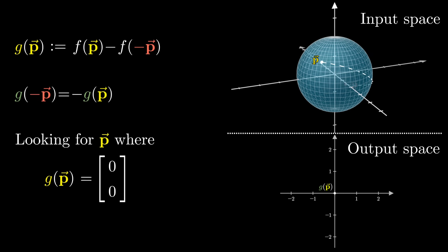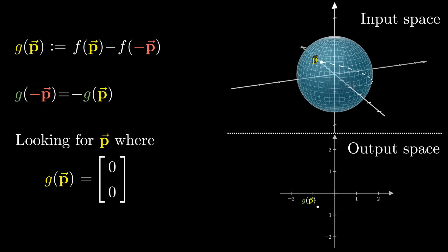This function g has a pretty special property which is going to help us out, that g of negative p is equal to negative g of p. Basically negating the input involves swapping these terms.